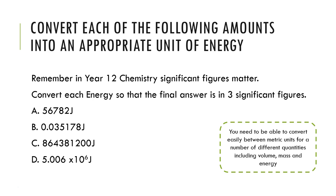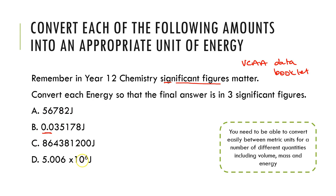It is essential to be able to move easily from one unit to another. In your VCAA data booklet you are given a list of metric conversions to use throughout your exam. Moving forward, we need to use the correct number of significant figures in Year 12. Remember: zeros before the first integer are not significant, but zeros after the decimal place are significant.